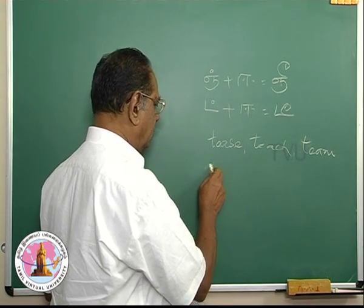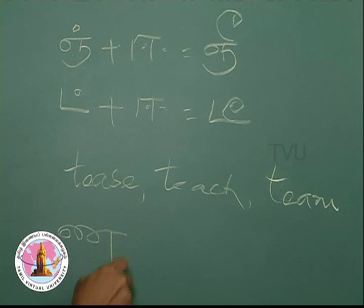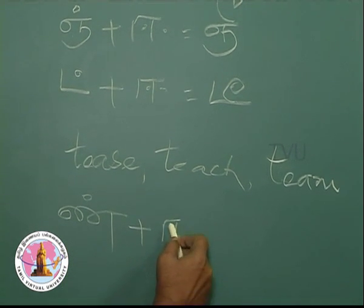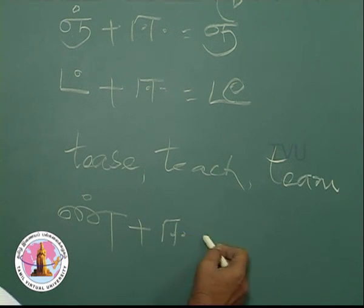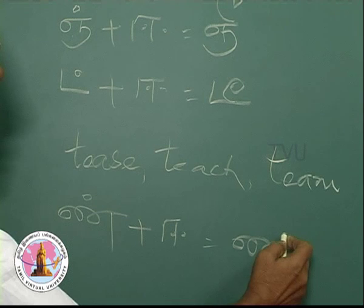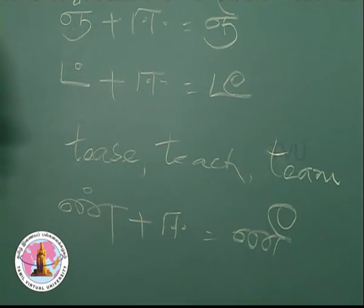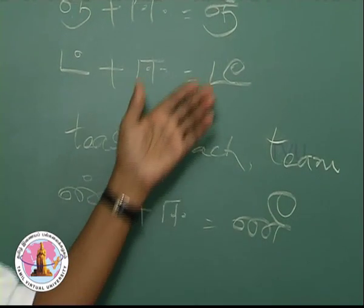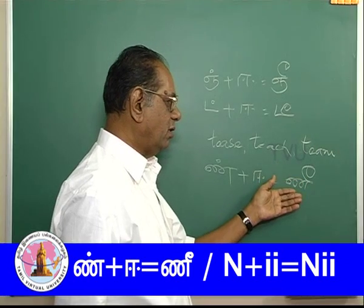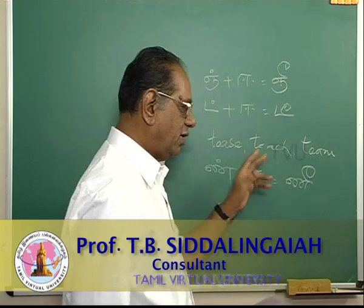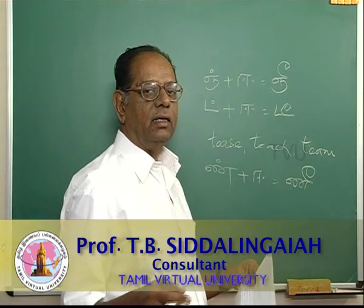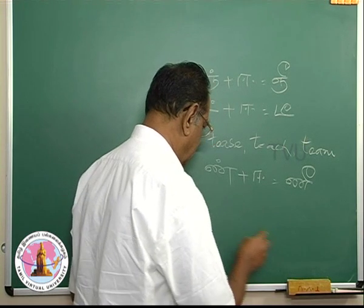Next letter is the nasal one, n plus ee, it becomes nee. Generally, I avoid giving you any example from the English language since the nasals are pronounced differently here and the pronunciation of the same in English is different.